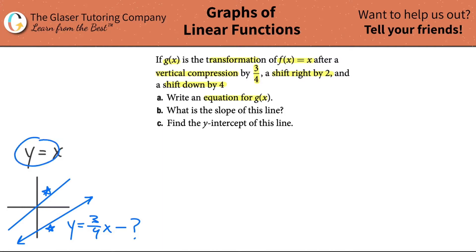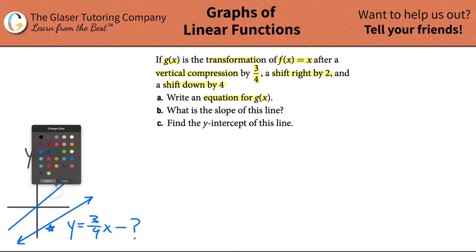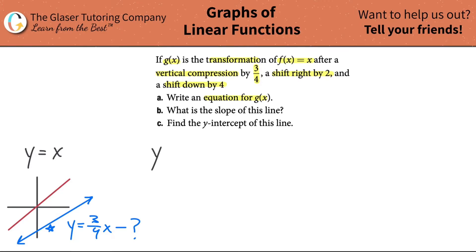This blue line represented the old equation. Now, how do we actually do this? There's a couple of ways to view it. I'm going to give you a simple formula to follow — by the way, this is my own notation; you probably won't find this in a textbook, but I think it works out pretty well. You're going to take your vertical compression, whatever that value is, and multiply it by x. Then you're going to subtract the shift to the right.